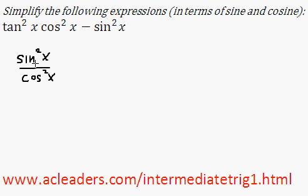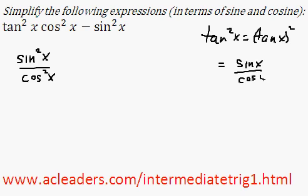And hopefully that makes sense, because tangent squared x is basically equivalent to tangent of x squared. And tangent of x is just sine x over cosine x. And if we square them both, this would be sine squared x over cosine squared x.